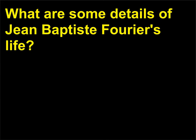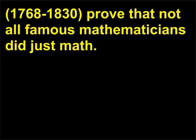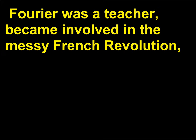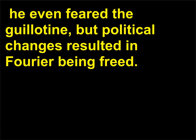What are some details of Jean-Baptiste Fourier's life? The accomplishments of French mathematician and physicist Baron Jean-Baptiste-Joseph Fourier, 1768–1830, prove that not all famous mathematicians did just math. Fourier was a teacher, became involved in the messy French Revolution, and was arrested for his views and imprisoned in 1794. He even feared the guillotine, but political changes resulted in Fourier being freed.